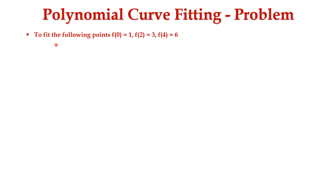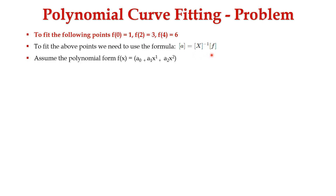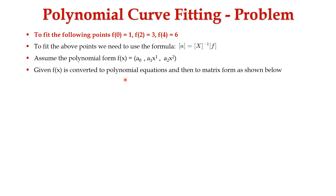Now let us consider the problem: fit the following points — f(0)=1, f(2)=3, and f(4)=6. To fit these points, we use the formula a = X⁻¹·f. We assume the polynomial form f(x) = a0 + a1·x + a2·x². The function f(x) is first converted into polynomial equations: f1 = a0 + a1·x1 + a2·x1², f2 = a0 + a1·x2 + a2·x2², and f3 = a0 + a1·x3 + a2·x3².